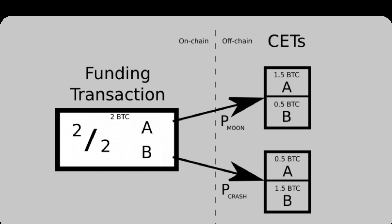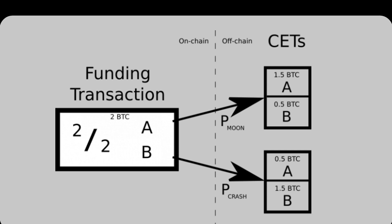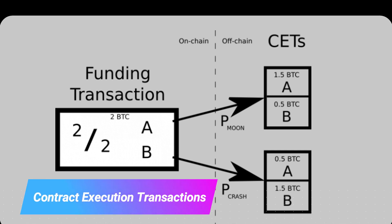So we start constructing that funding transaction, and we're also able to compute — your wallet is doing this — public keys associated with each of the possible event outcomes. These are derived from the Schnorr signatures that the oracle might broadcast. In our case, there are just two outcomes: moon or crash. So there would be two public keys that we can derive based on the potential signature that the oracle might broadcast, depending on which of those outcomes actually happens. Now that we have those ingredients, we can also form what are called contract execution transactions, or CETs, and these specify how the funding transaction outputs would get dispersed depending on the event outcome.